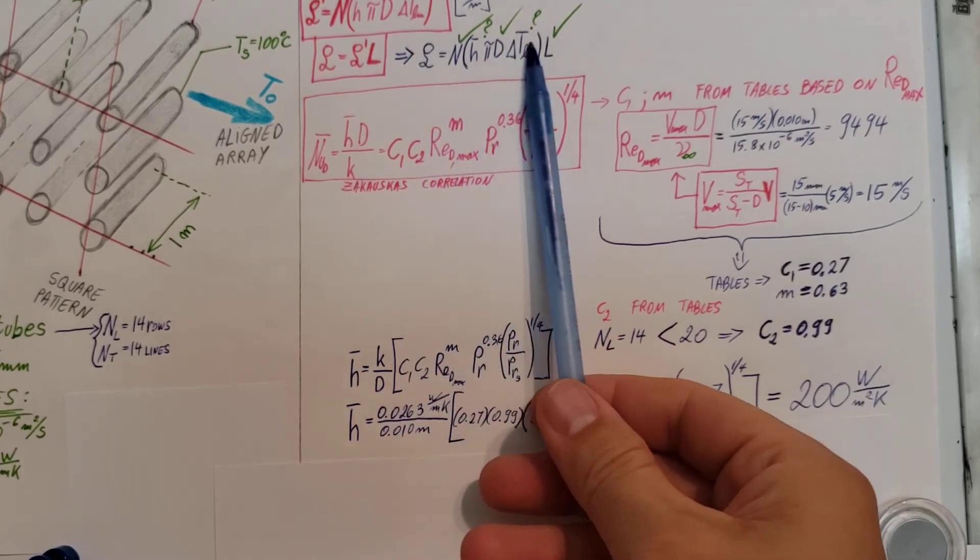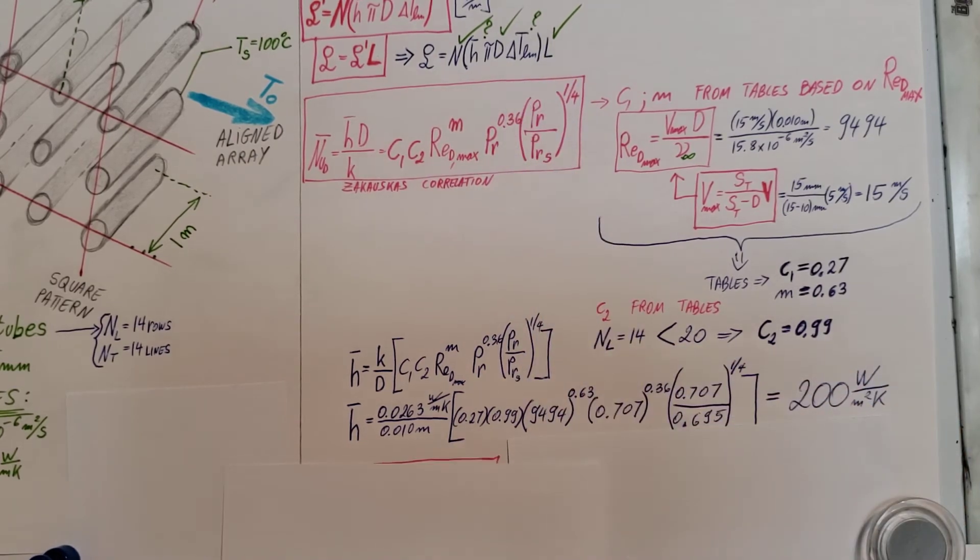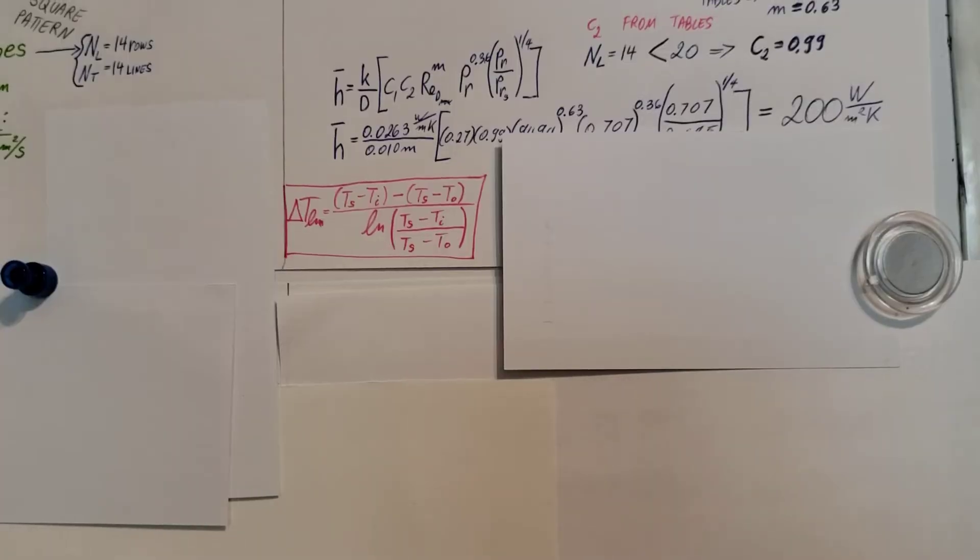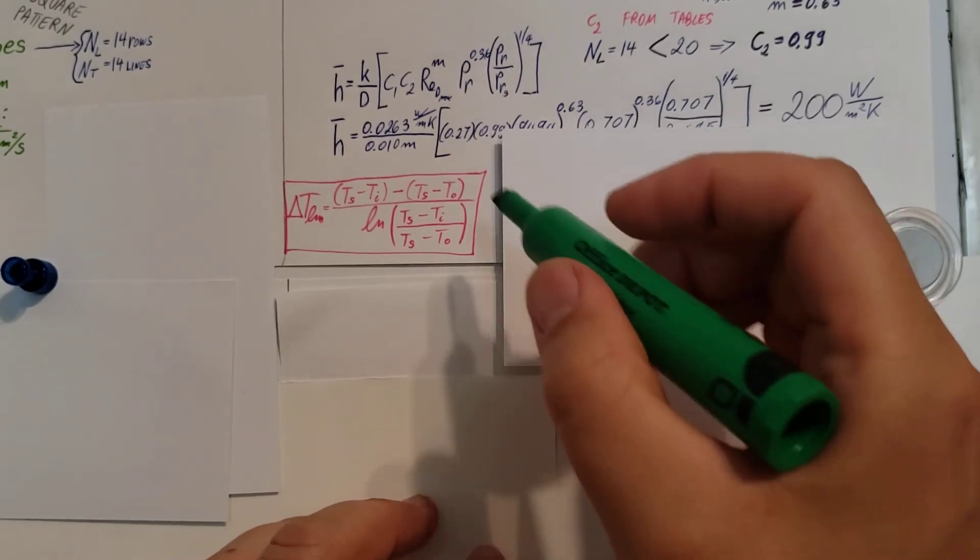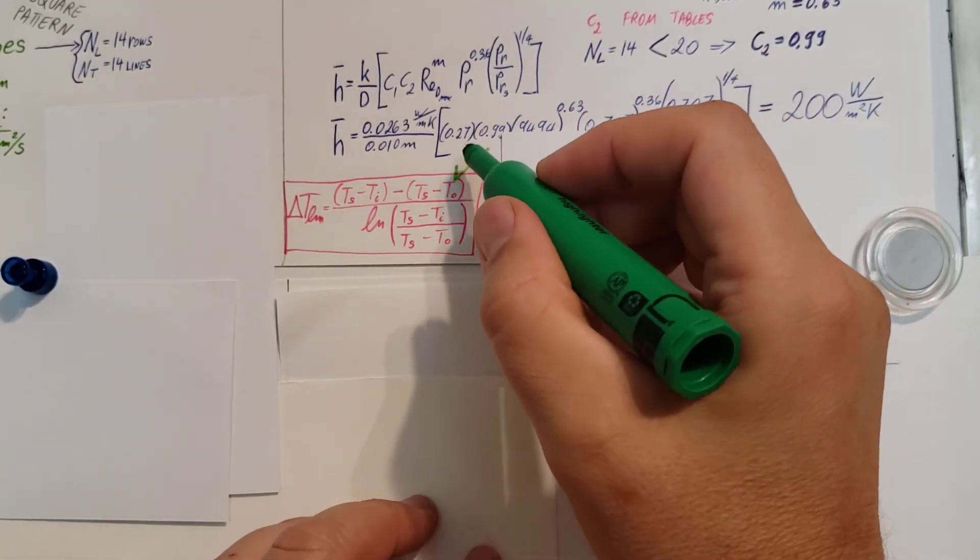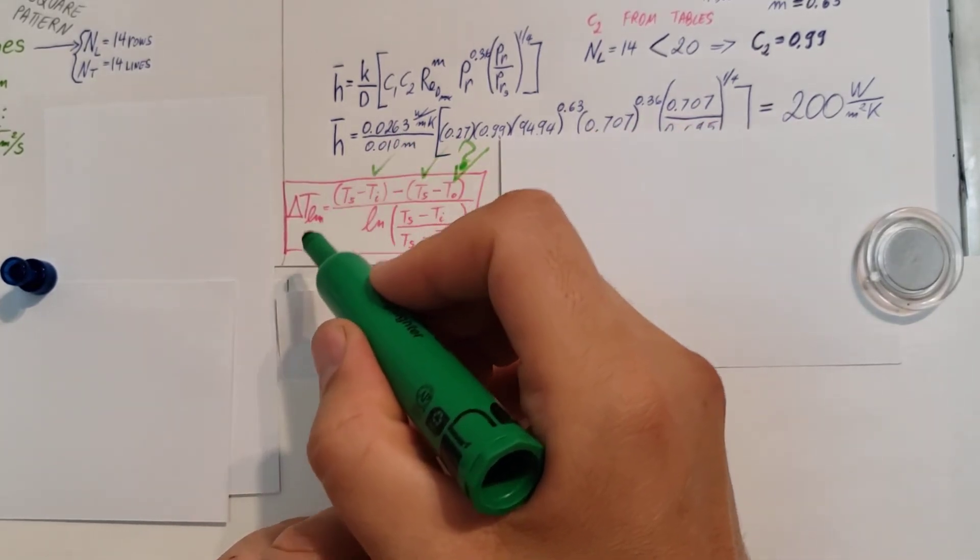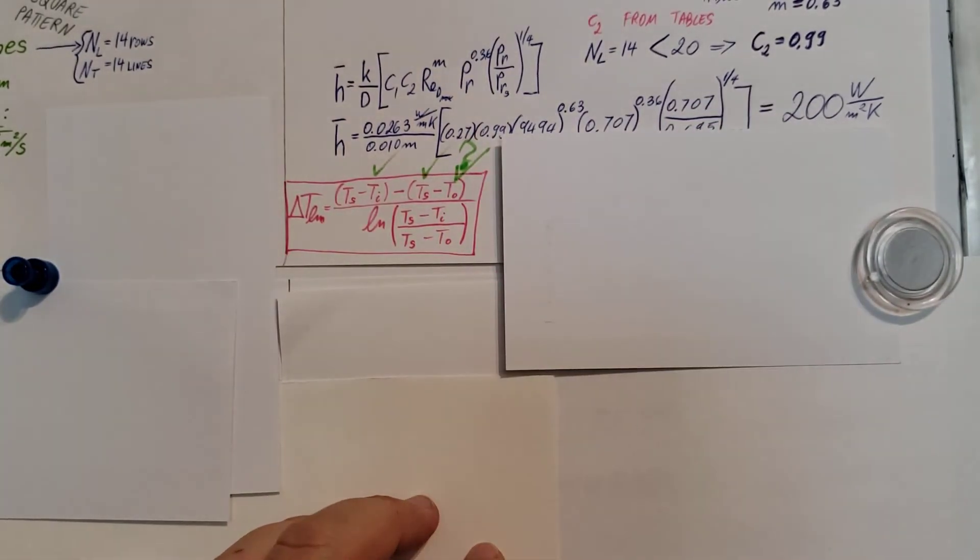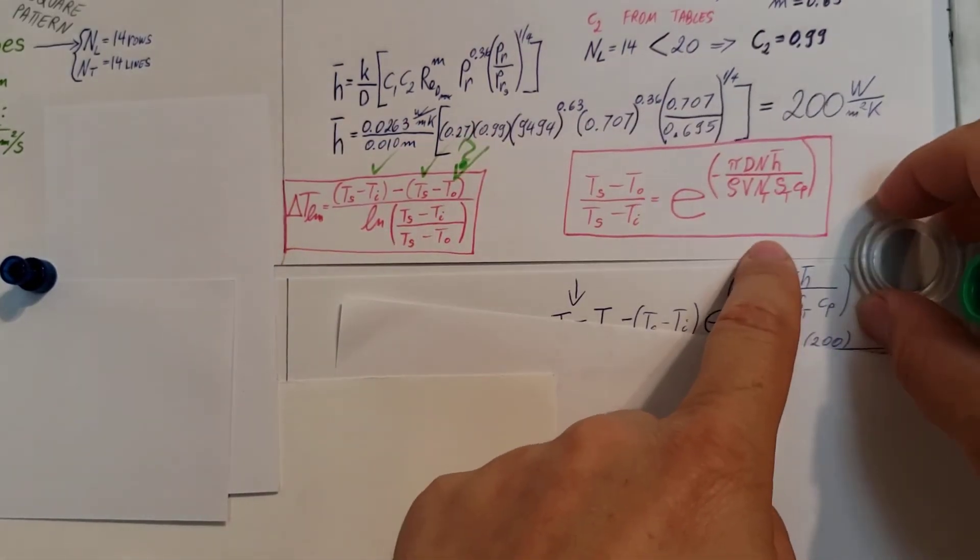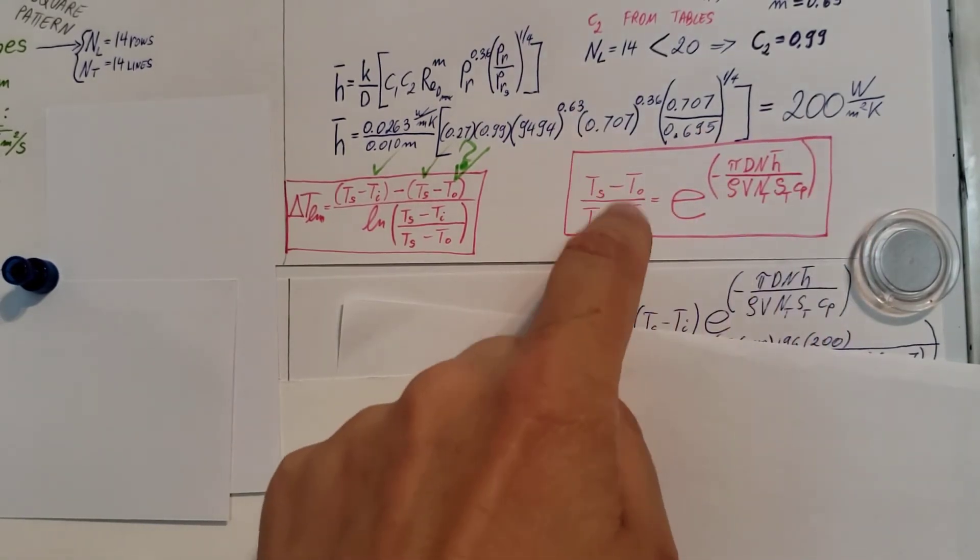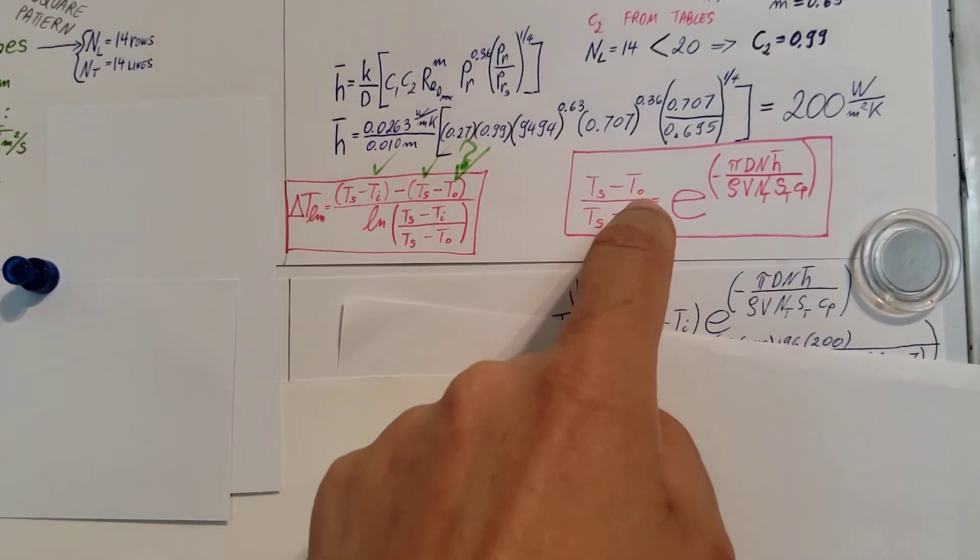Now we have our H. We go back to this formula and we need to work on log-mean temperature difference, delta T LM. We write up our formula for that. Here we can analyze it and we can see that we have all that we need except the outlet temperature. This is the only one we don't have. We have TS, we have TI, the outlet temperature from our system - that's the only one we don't have. We're going to write up yet another correlation right here.